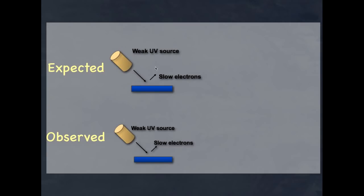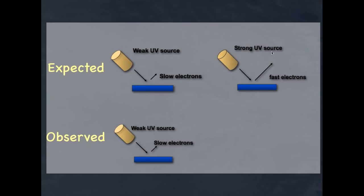Lenard fired a weak ultraviolet source and expected that a weak source would produce a slow electron. He therefore thought that if he applied a strong UV source, the electrons would get faster — that increasing the intensity of the UV source would mean the electrons would have more energy. More intensity means more energy, so he predicted fast electrons. But unfortunately, that's not what he observed.